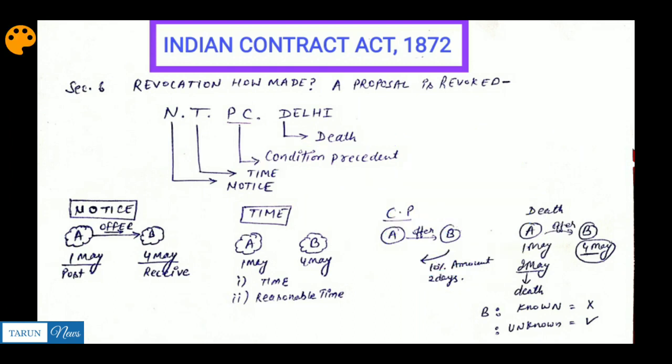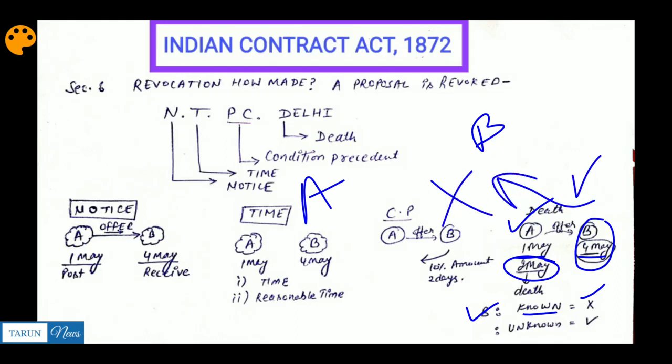Next point is Death. Say between A and B, one sent a letter on the 1st and the other received it on the 4th. Now in this case, suppose A, who sent the revocation letter on the 2nd, expired. Then there are two conditions: if B has come to know about A's death before the 4th, before the letter reached him, then the contract will not be considered valid. But if B doesn't know, then he can send his acceptance letter.